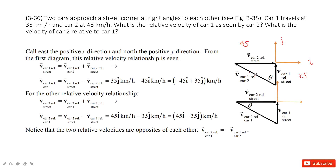The problem asks for the velocity of car one relative to car two. The easiest way is to use the relative velocity equation: the velocity of car one relative to the ground equals the velocity of car one relative to car two, plus the velocity of car two relative to the ground. So we find the velocity of car one relative to car two equals the velocity of car one to ground minus car two to the ground, which gives us 35j minus 45i.